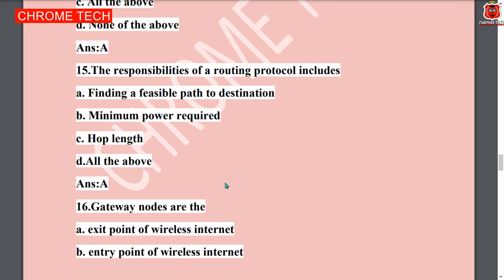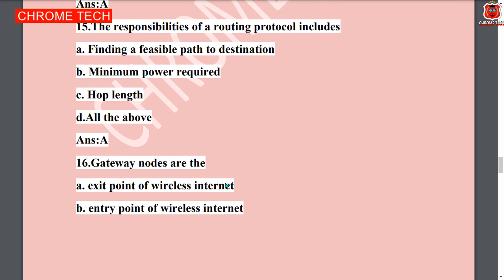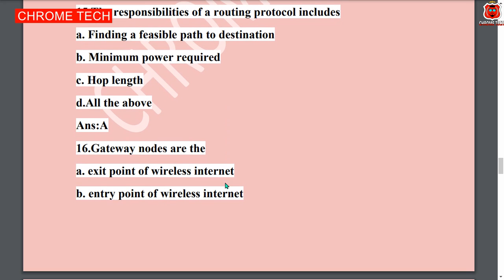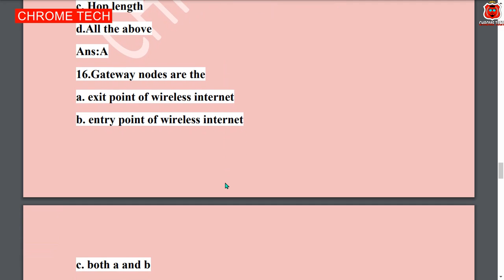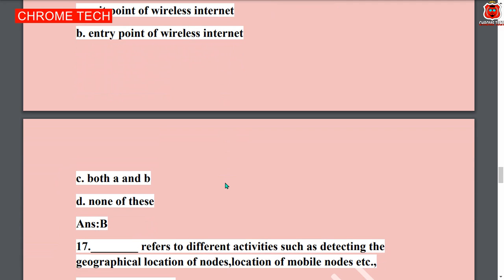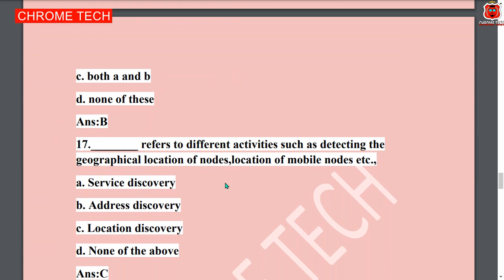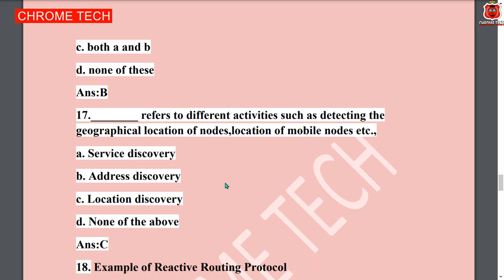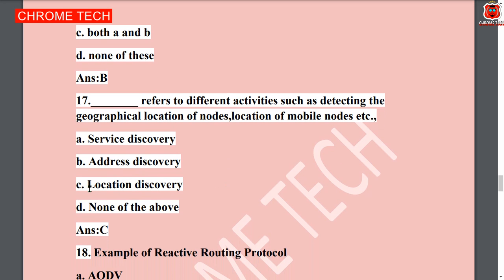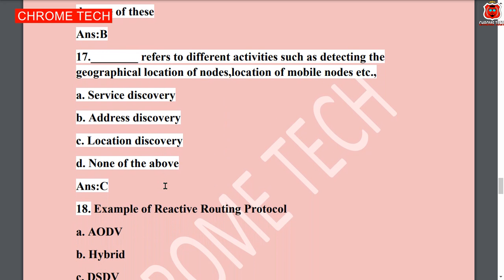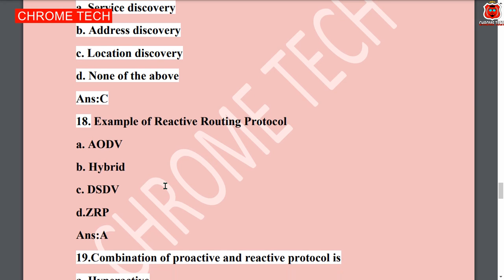Fifteenth question: the responsibilities of a routing protocol include finding a feasible path to the destination — that is the correct answer. Sixteenth question: gateway nodes are — option B, entry point of wireless internet, is the correct answer. Seventeenth question: location discovery refers to different activities such as detecting the geographical location of mobile nodes — option C, location discovery, is the correct answer. Eighteenth question: example of reactive routing protocol — option A, AODV, is the correct answer.